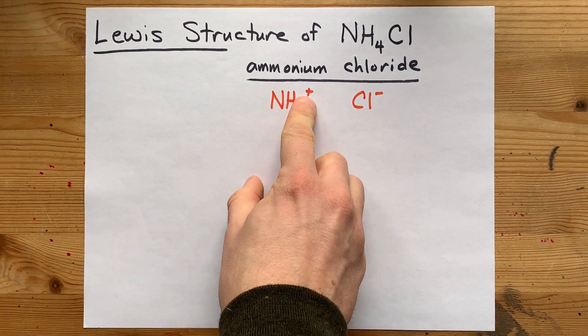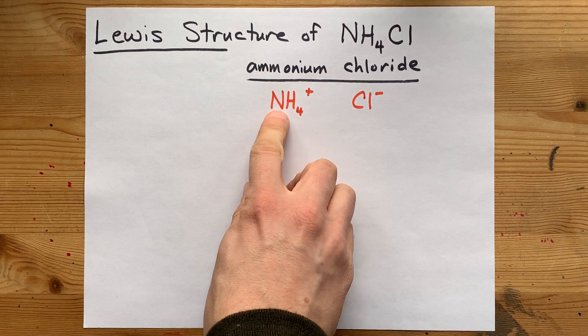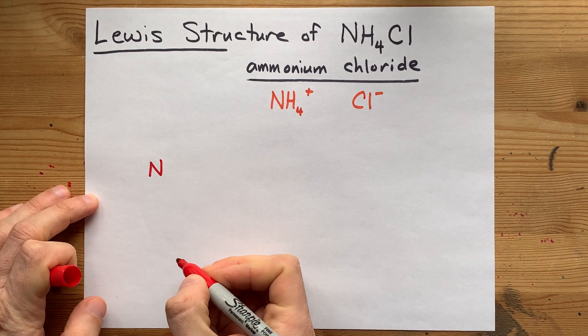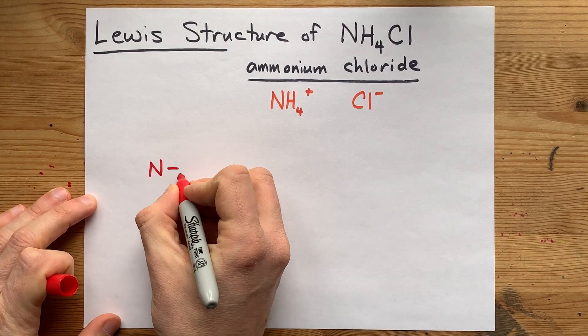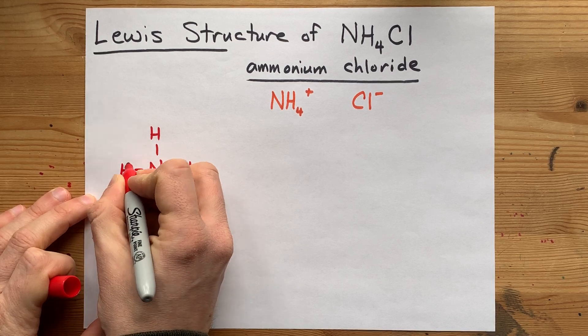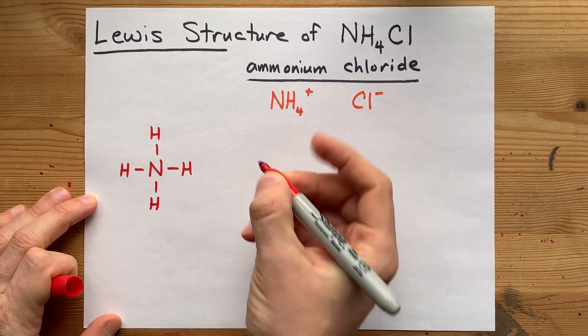Now, NH4+ itself is made of non-metals. In fact, you can probably guess that you have a nitrogen in the center with four hydrogens around it, but I'll show you how to count the electrons to make it happen right now.